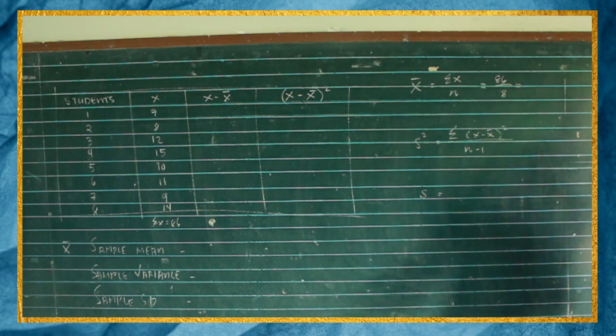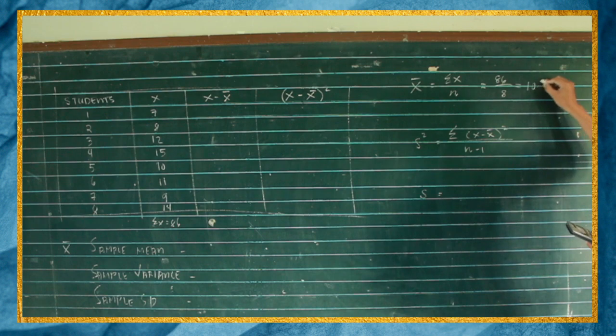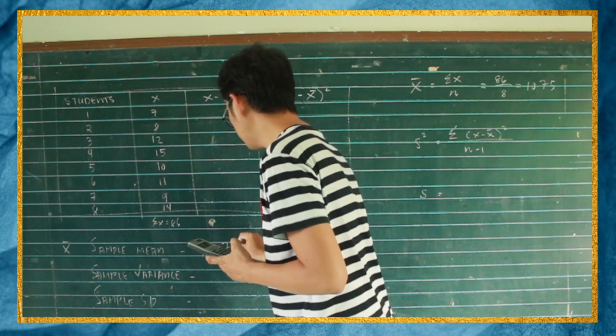So 86 divided by 8. So 10.75. It means the sample mean is 10.75.